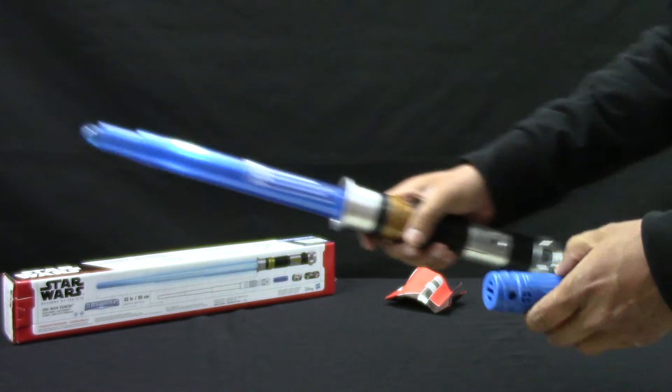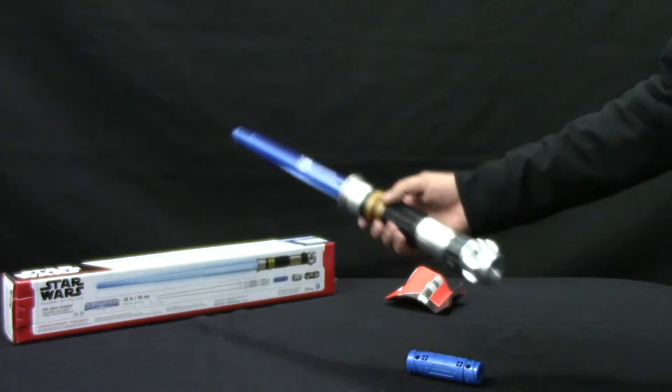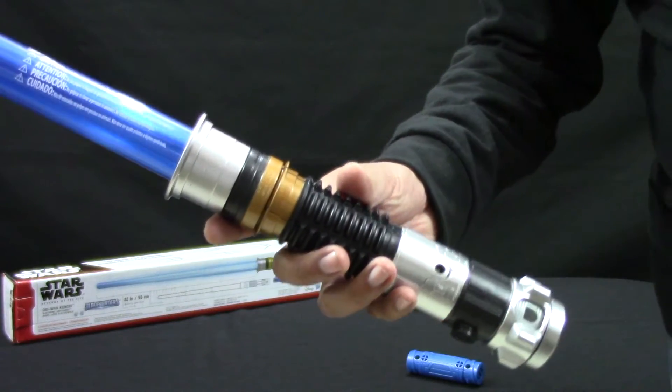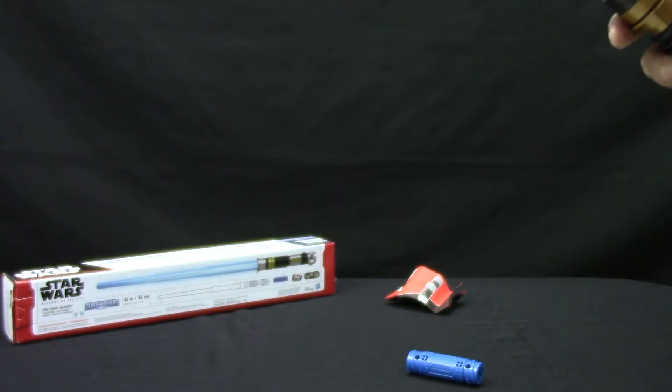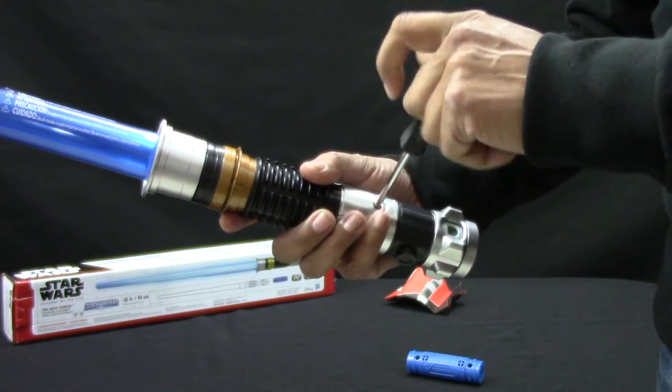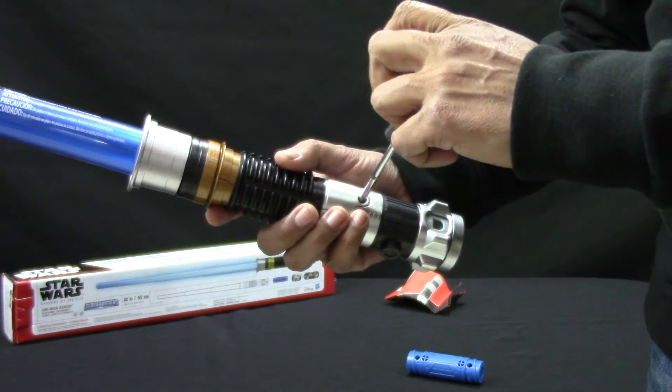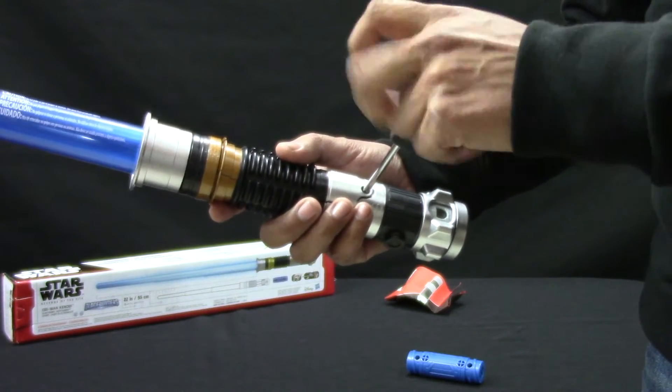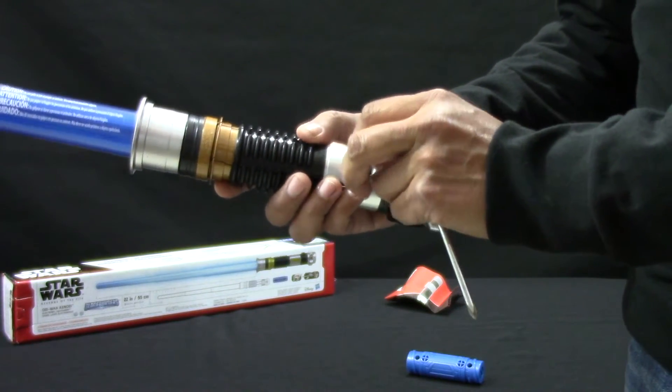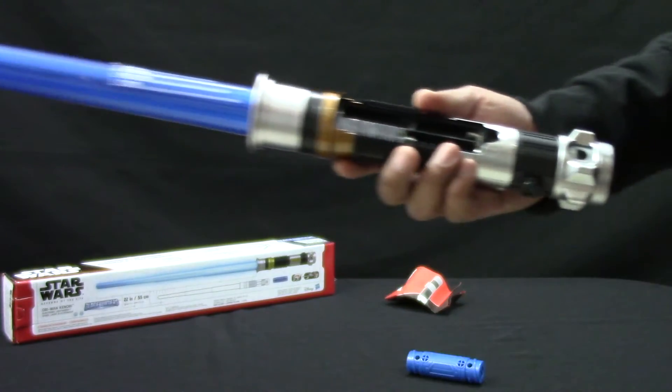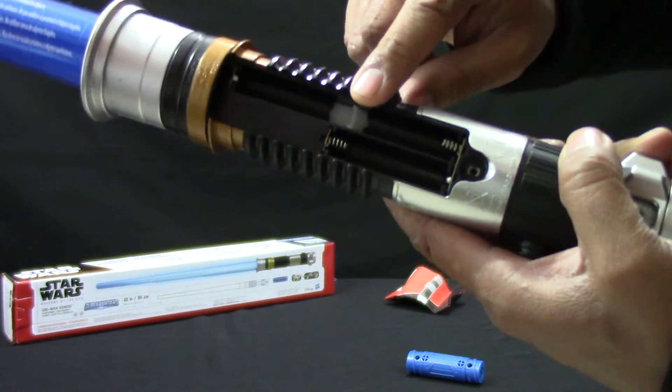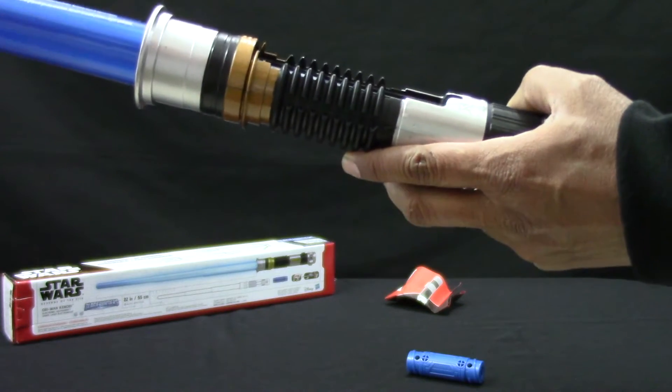As we have already mentioned, this lightsaber works with three AAA batteries not included. Now it's time to place them. You will need to use a screwdriver to remove the battery cover. Inside shows the position in which the batteries should be placed. We are going to place them now.